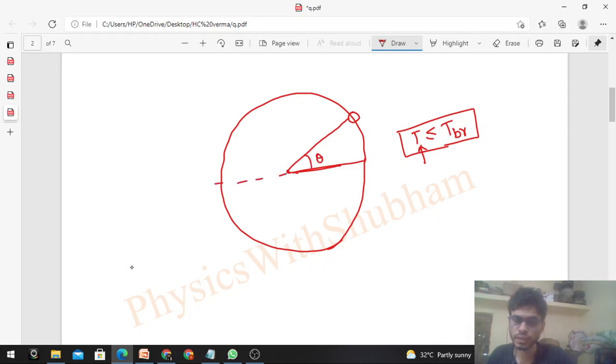This angle will be theta. Now take the component of mg, because whenever we draw the free body diagram for circular motion, we break forces into tangential and radial directions. In this direction, you have mg cos theta, and in this direction you have mg sin theta.